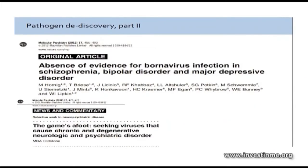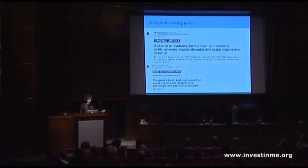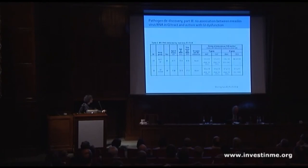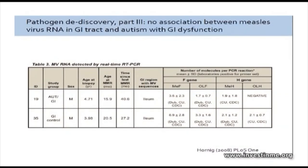We have similarly looked in other disorders for associations with other infectious agents. This is a large multi-center study for Bornavirus and neuropsychiatric disease — ME-CFS had also been implicated in Bornavirus. We showed in a smaller study that also was not associated with ME-CFS. In autism, we found no association between measles virus in the gastrointestinal tract and autistic disorder.